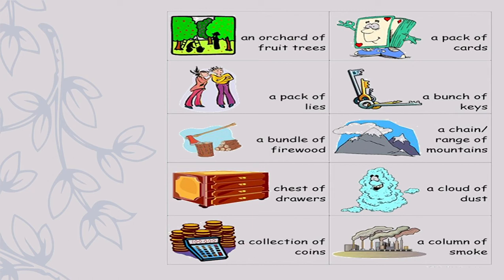An orchard of fruit trees, a pack of cards — we should not speak a pack of lies! Where is my bunch of keys? The woodcutter was cutting a bundle of firewood. There is a range or chain of mountains. I can't open these chests of drawers. There is a cloud of dust. I have a collection of coins. There is a column of smoke. The collective nouns are: orchard, pack, bunch, bundle, chain or range, chest, cloud, collection, and column. A bundle can be of firewood; a bunch can be of grapes or keys.